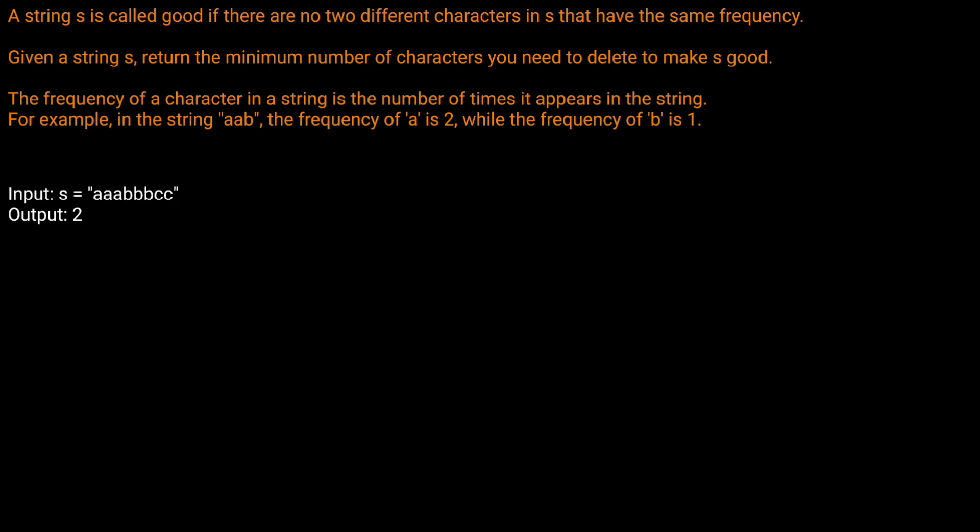A string s is called good if there are no two different characters in s that have the same frequency. Given a string s, return the minimum number of characters you need to delete to make s good. The frequency of a character in string s is the number of times it appears in the string. For example, in the string 'aab', the frequency of 'a' is two while the frequency of 'b' is one.